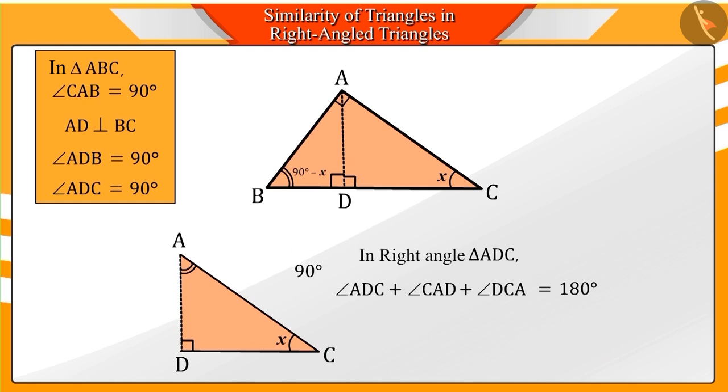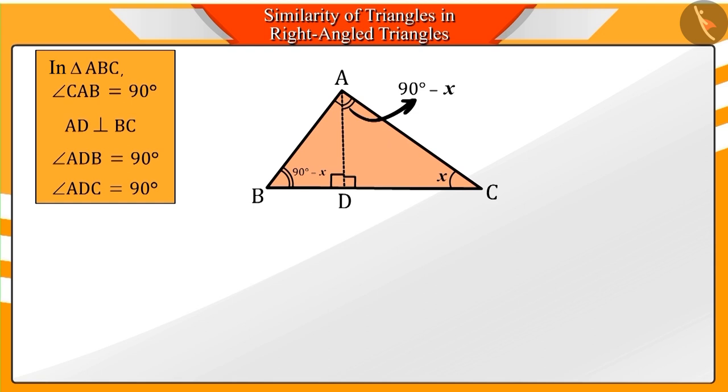Similarly, the measurement of angle CAD in triangle ADC will also be 90 minus X. Similarly, can you tell the measurement of angle DAB in triangle ABD?